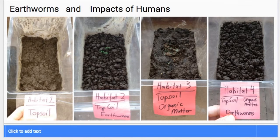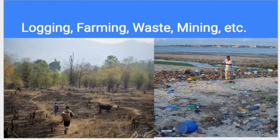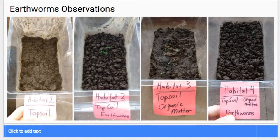So we're going to be using this earthworm data and then reflecting on the impacts of humans in an ecosystem. Humans have a vast, vast impact on ecosystems around the world, especially with logging of forests, farming, waste, mining. When we are making claims, you need to make sure you can support those claims with evidence.